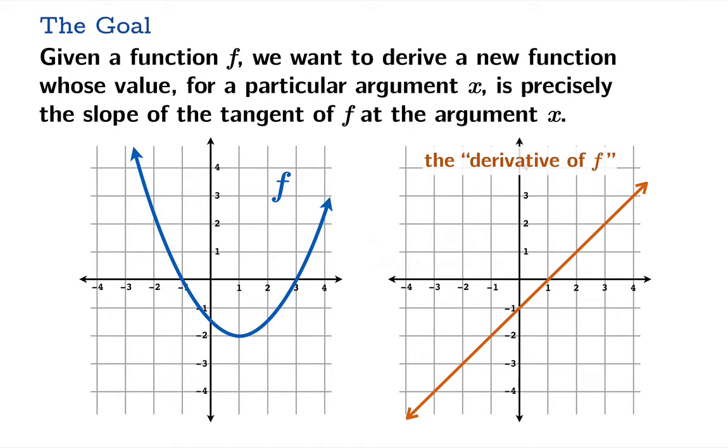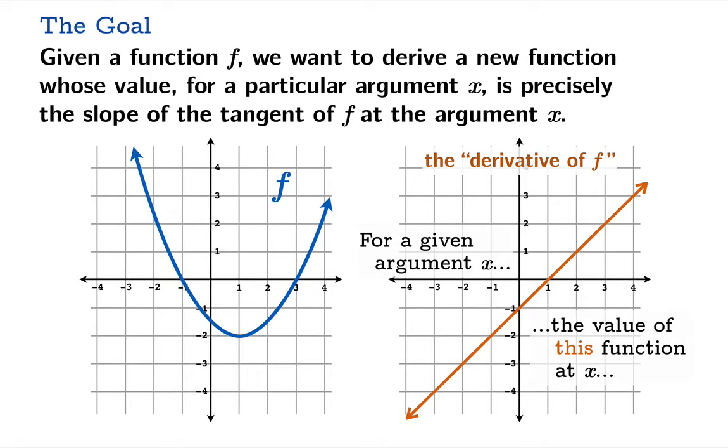So here's how the derivative works. For a given argument x, the value of this function at x, the derivative function, yields the tangent slope of the original function at x.